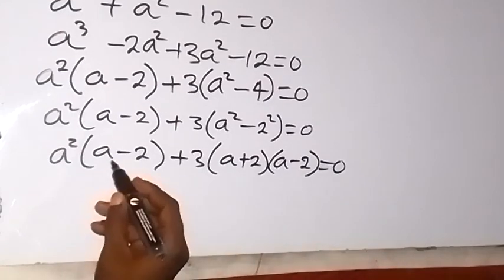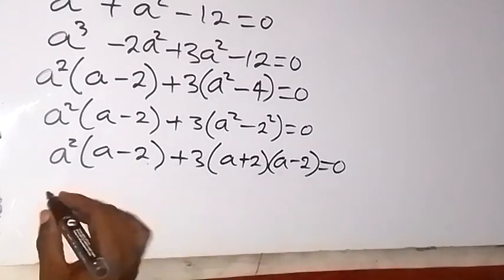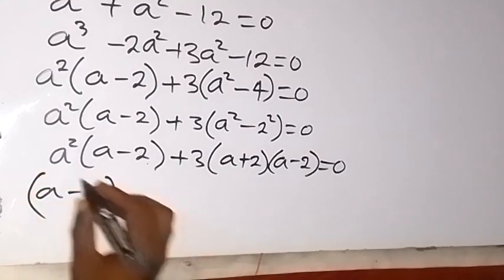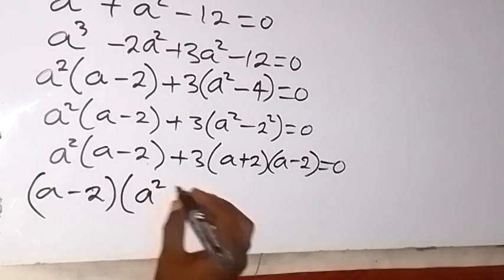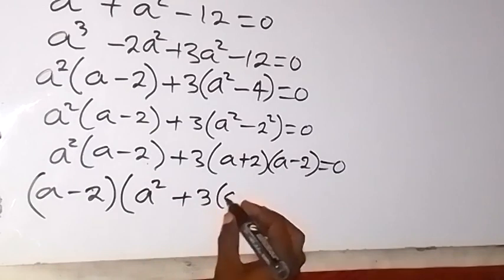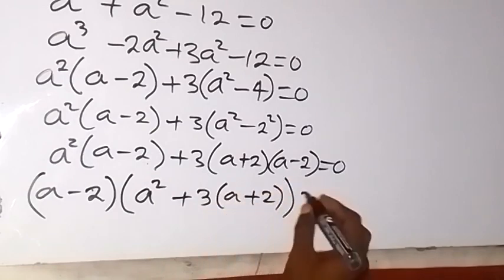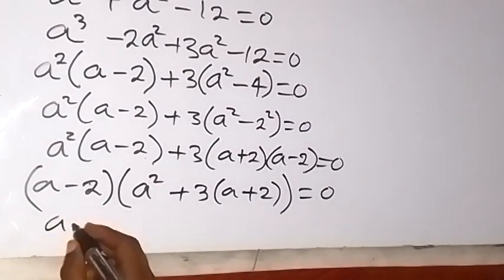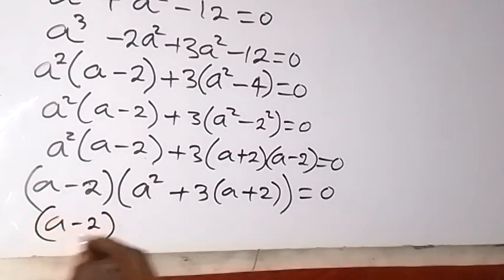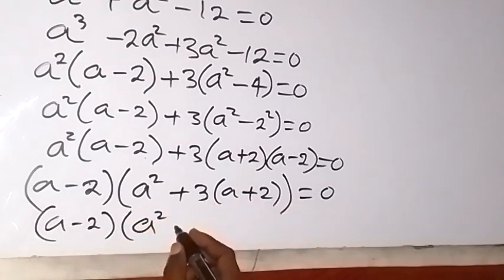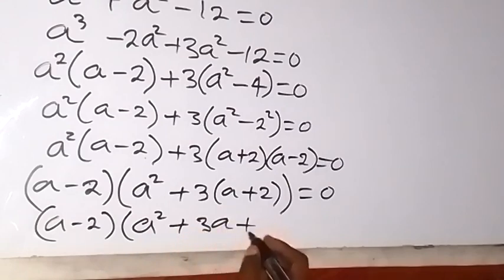We can see we have (a minus 2) as a common factor. What remains in the first term is a squared, and in the second term plus 3 times (a plus 2), giving us: (a minus 2) times (a squared plus 3a plus 6) equals 0.